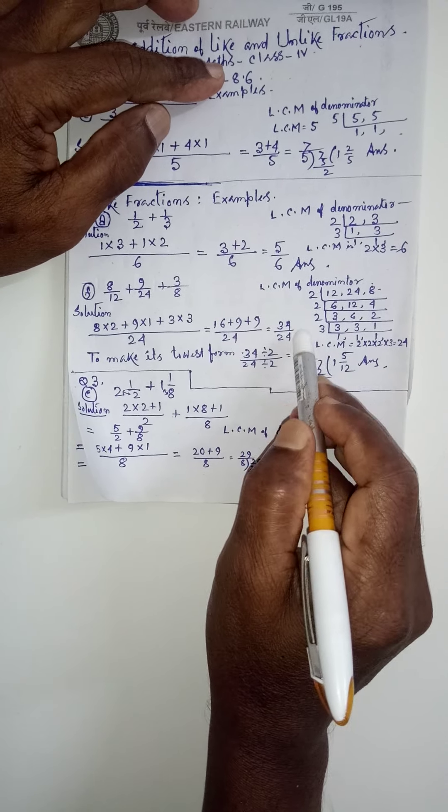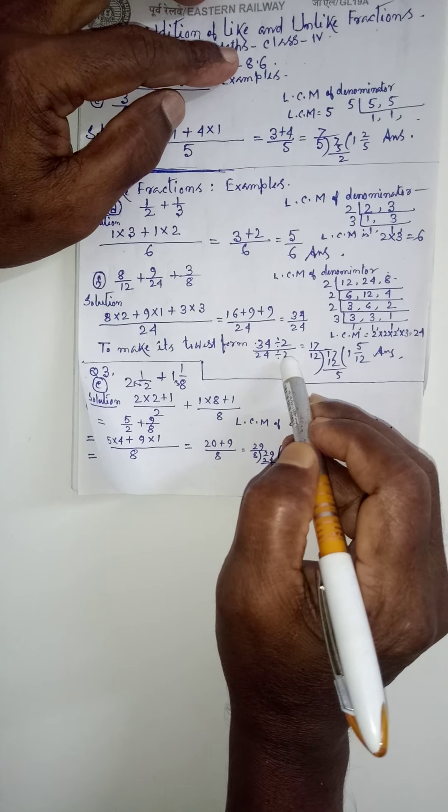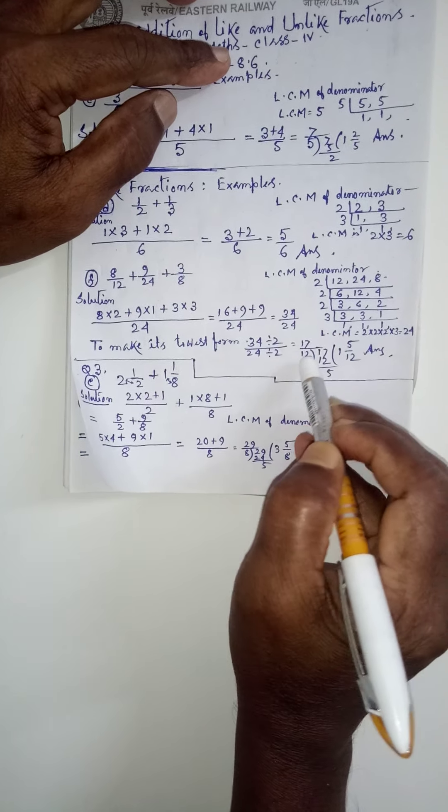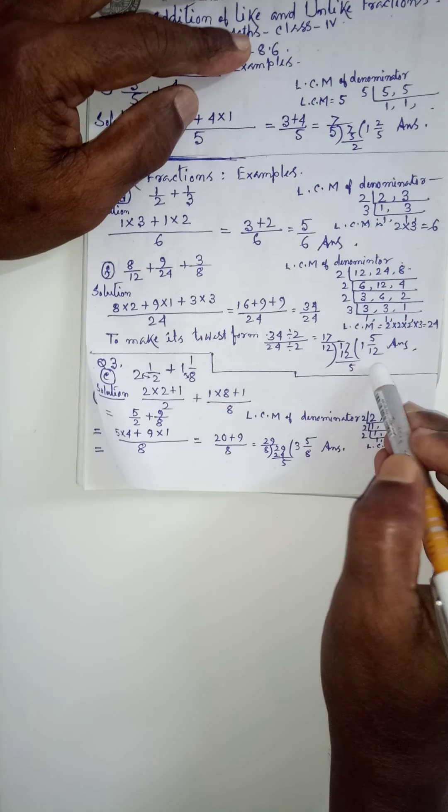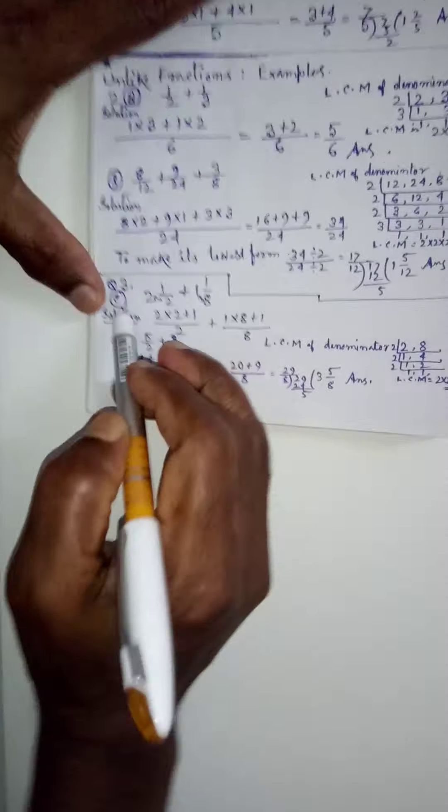Dividing by both the numerator and denominator by 2, we are getting 17 by 12. See, 17 ko 12 say, divide karna se 1, 5 by 12 answer. Like this.